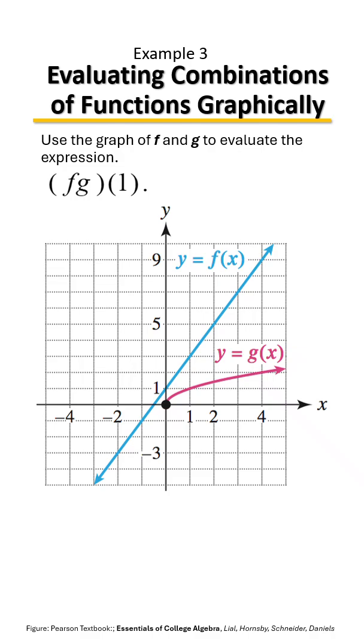Here we're going to use the graph of f and g to evaluate the function f times g of 1. Recall that we're going to have to evaluate both functions. So we're going to find f of 1 and then we're going to find g of 1. And what we're going to do is this time we're going to multiply their outputs.